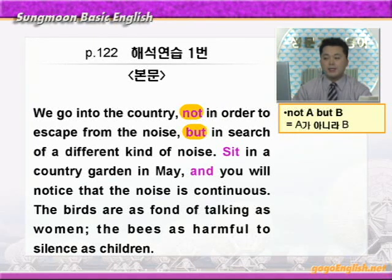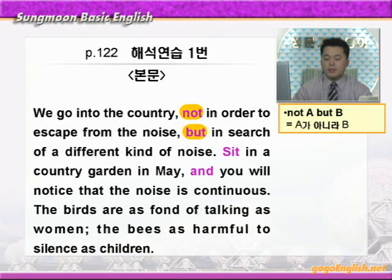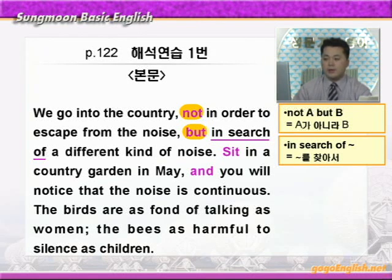not A but B 하면 A가 아니라 B, 이런 뜻이죠. 정말 자주 나오죠. 그러니까 소음에서 벗어나기 위해서가 아니라 뭐하기 위해서 시골로 간다? 'In search of a different kind of noise.' in search of에 밑줄 쳐보면, search가 수색·탐색 이런 뜻이니까 in search of는 '뭐뭐를 찾아서' 이런 뜻이 됩니다. 그러니까 다른 종류의 소음을 찾아서 시골에 간다.